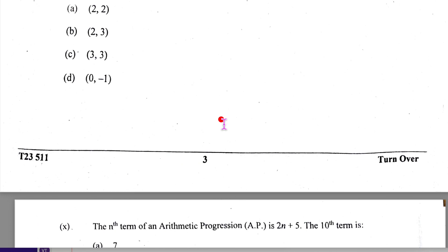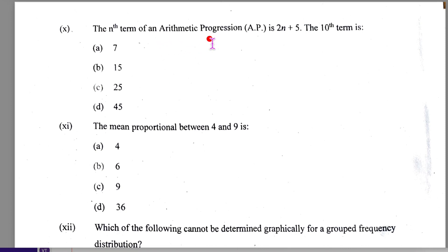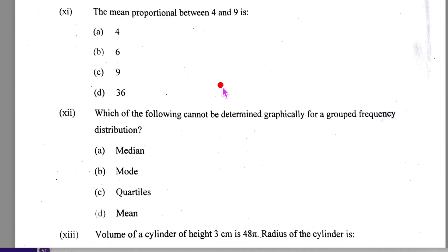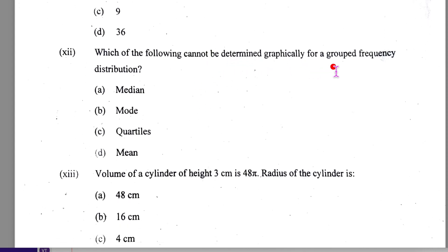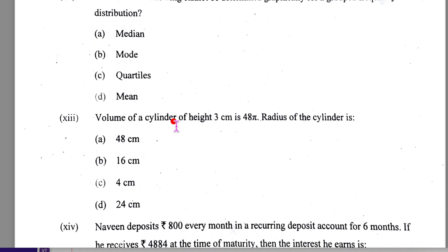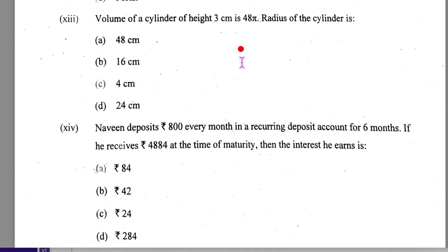It is going fast. Then look at your nth term of the arithmetic progression is 2n plus 5, so the 10th term is - now 10th term will be substitute here for 10 and that will be 15. Mean proportional between this and this: mean squared equal to product of extremes, this is what we have to do. Cannot be determined graphically for group frequency distribution - you can get median, you can get mode, you can get quartiles, but you cannot get mean. Now volume of cylinder of height: this is 48 pi, radius of the cylinder - you use the formula, just substitute and get the values.